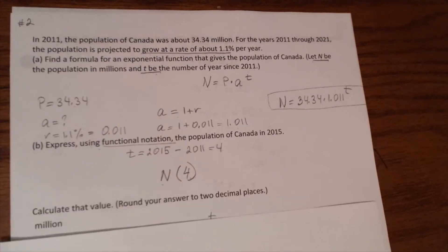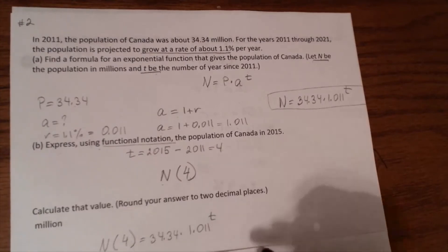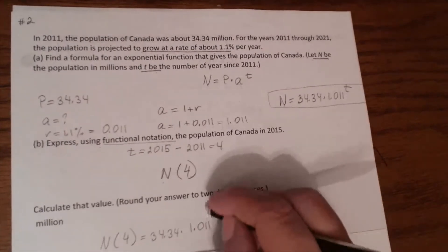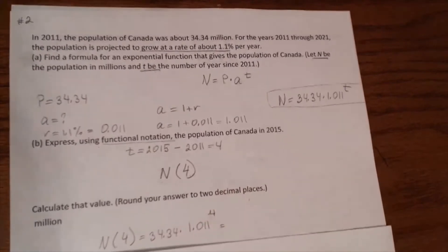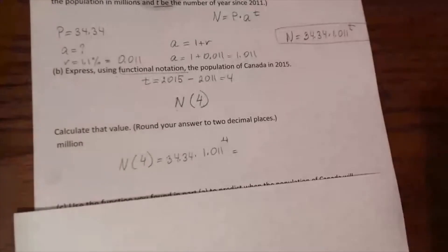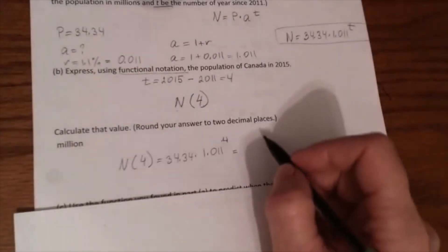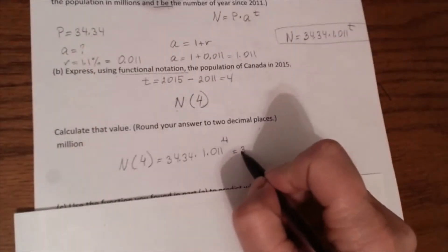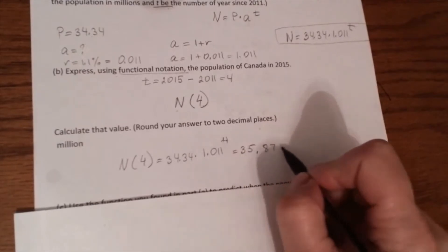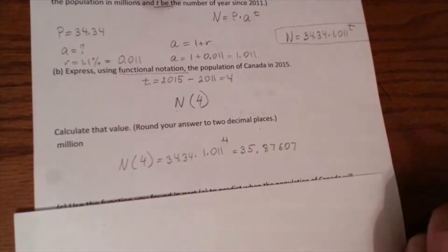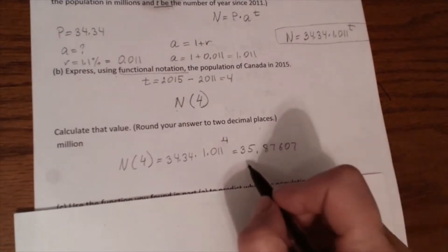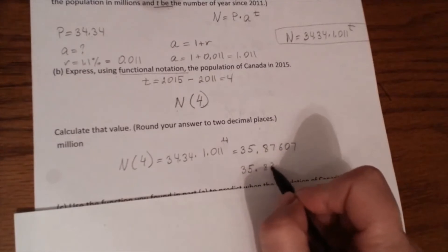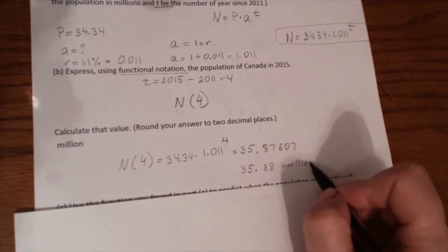Now we need to calculate this value. We need to substitute 4 for T and calculate. I calculated this already, so the answer is 35.87607. We need to round our answer to two decimal places. So the final answer will be 35.88 million people.